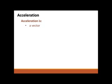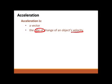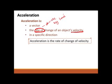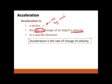Acceleration is a vector. It is the rate of change of an object's velocity — rate of change means divide by time — in a specific direction. Unlike velocity, which is in the same direction as displacement, velocity and acceleration do not need to be in the same direction. Acceleration is the rate of change of velocity, and that leads us to the equations of motion.